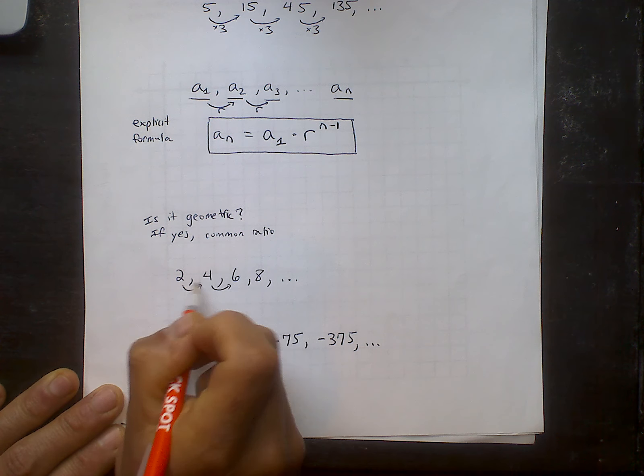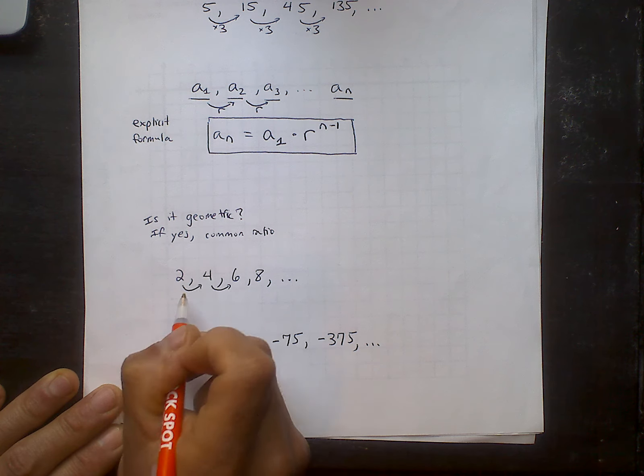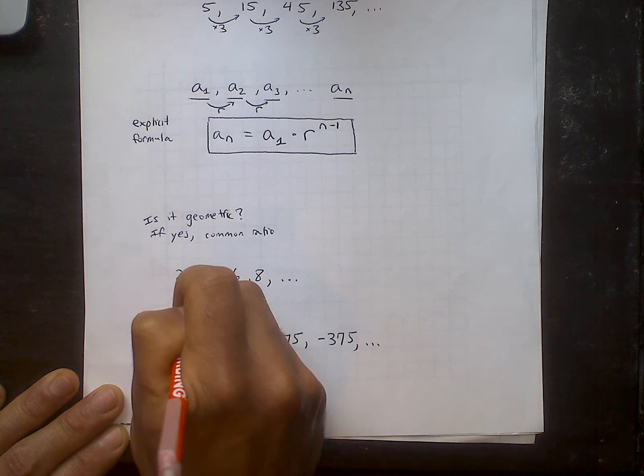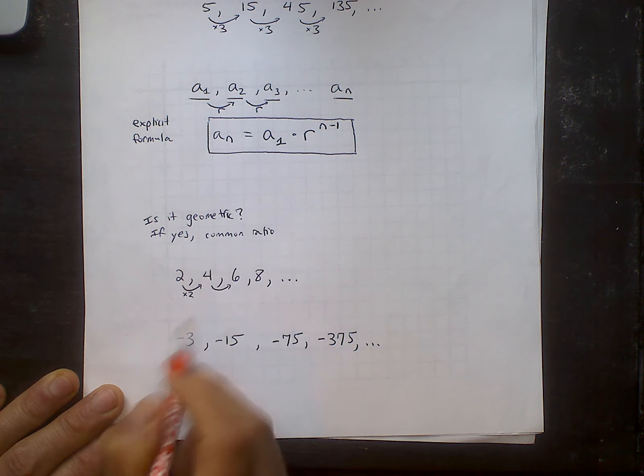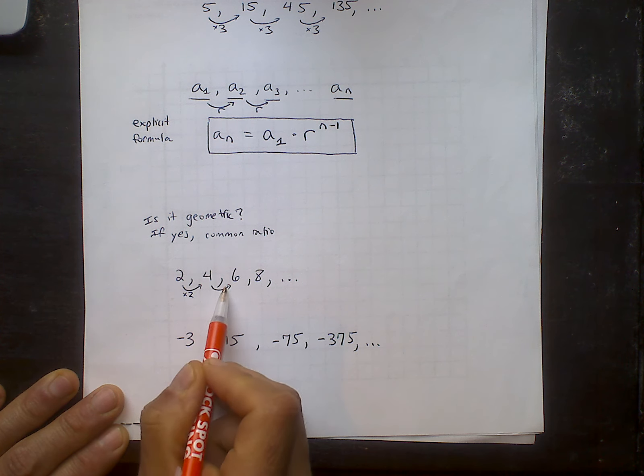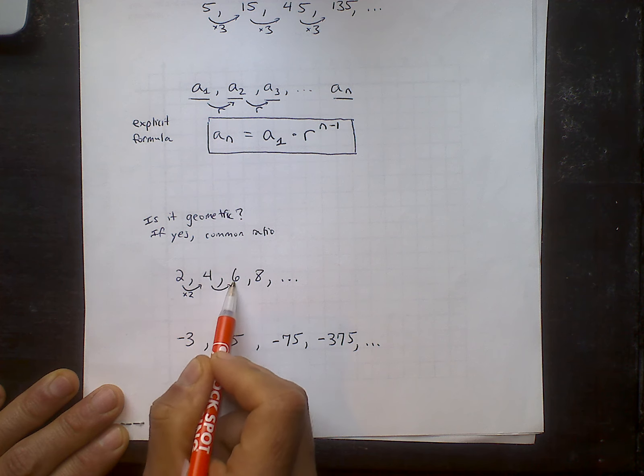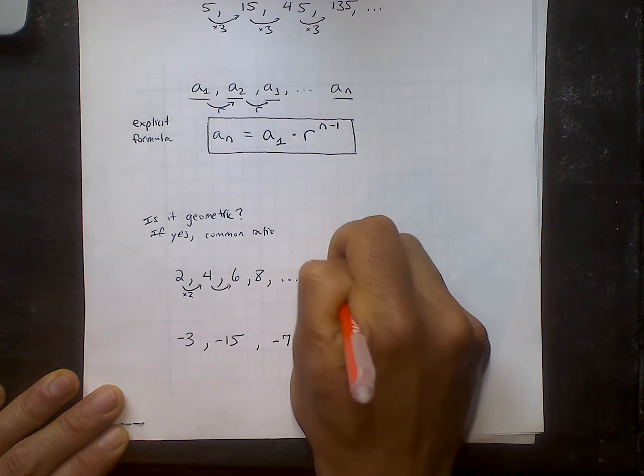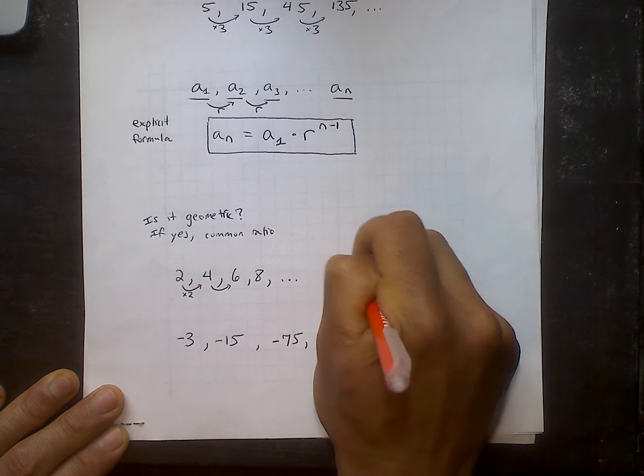Well, if I want to get from the first number to the second number, I could always divide and reverse. Four divided by two will give me the multiplier. Two times two is four. But however, it is not the same. It's not the same multiplier to get to the next one. Because four times two would give me eight, not the next term. So therefore, I know this is not geometric.